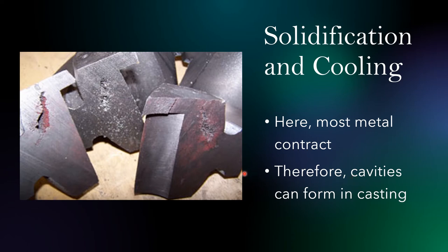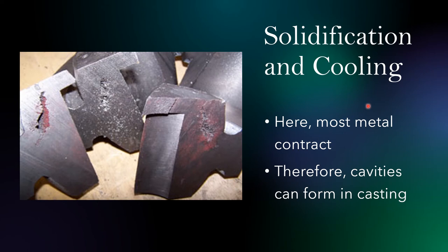Most metals contract during solidification and cooling. Contraction means the material decreases in size. Because of this contraction, cavities can form inside the casting during solidification and cooling. Therefore, pay attention to the contraction of the metal — most metals will contract and reduce in size — and we must account for that effect in our manufacturing processes.